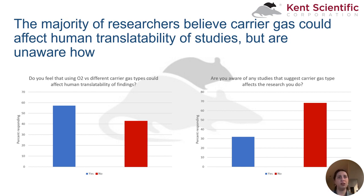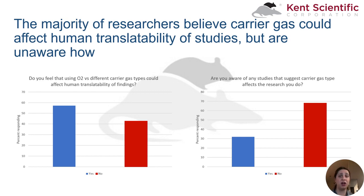I do want to be transparent — this is a survey of people coming to the Kent Scientific website, so it is entirely possible these numbers reflect a portion of our customer base that are already aware of some of the benefits of different oxygen percentages. However, we do see a discrepancy between the amount of researchers who are aware of any off-target effects of carrier gases, and would thus like to provide some more details about the different percentages of oxygen.